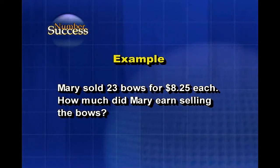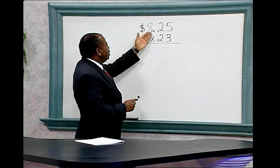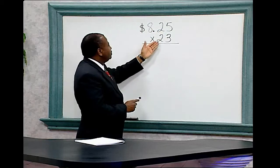Example: Mary sold 23 bows for $8.25 each. How much did Mary earn selling the bows? $8.25 times 23.